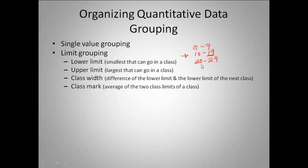When we talk about class width, that's the difference of the lower limit and the lower limit of the next class. So if I take my lower limit of 10 here and my lower limit of the next class of 20 and subtract them, I would have a class width of 10. Another way you can think about class width is how many values are there. If I go from 0 to 9, there's actually 10 values that fall into that category. So our class width is the difference of the lower limit and the lower limit of the next class.